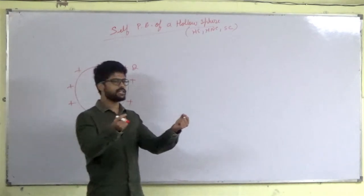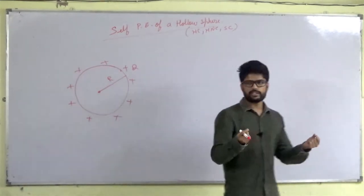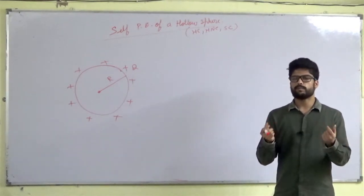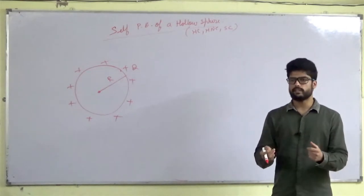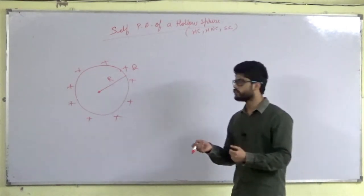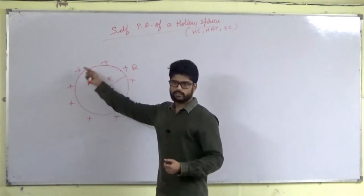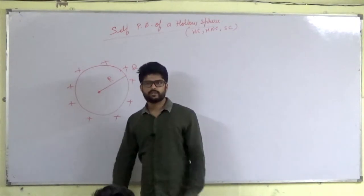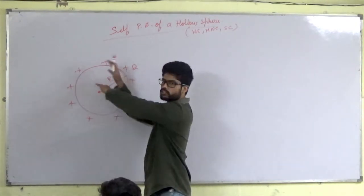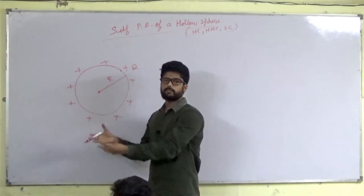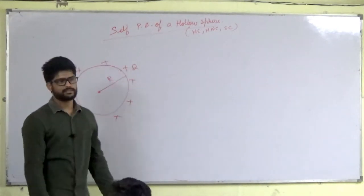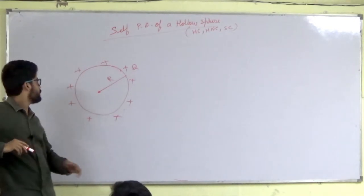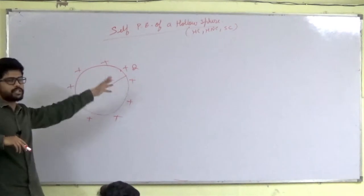We have two charged particles that we keep at a distance, so there is potential energy kQ² — this was the potential energy for two charged particles. Now there are also many charged particles at certain distances, all interacting with each other. The whole system of charges has a spread of potential energy that we need to calculate — this is the self-potential energy of the whole system.